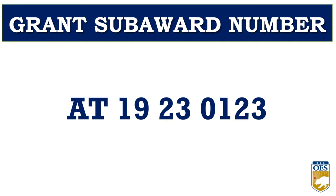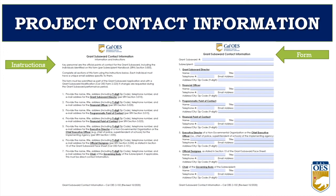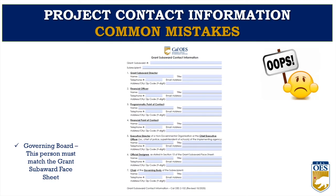This is the project contact information form — instructions on the left, current version on the right. Key reminders: use the most updated form from the website; include the full nine-digit zip code; each point of contact must be a different person so we can reach an alternate in urgent matters; no whiteout if you hand-write anything. On lines one and two, the grant subaward director and the financial officer must be different people — they cannot be the same person. The subaward number will be provided to the approved applicant and can be filled in by the program specialist.